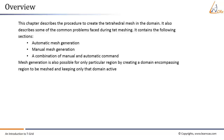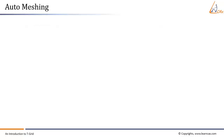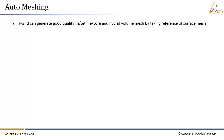The process also includes checking the mesh, improving the mesh quality, and meshing multiple domains individually. T-grid can generate good quality tri-tet, hex core, and hybrid volume mesh by taking reference of the surface mesh.